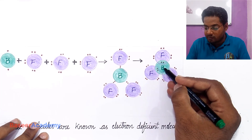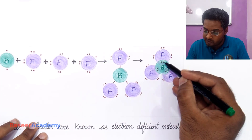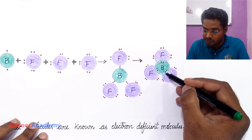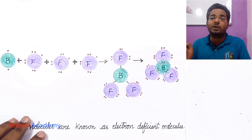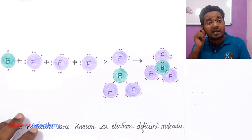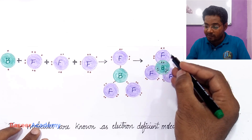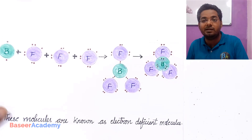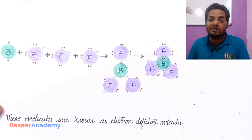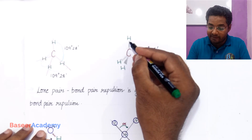In boron trifluoride, after bond formation boron has six valence electrons — it is also not attaining the octet. It does not have eight electrons in its outermost shell, and that is why boron trifluoride is also an electron deficient molecule, having fewer electrons than required to attain the octet.